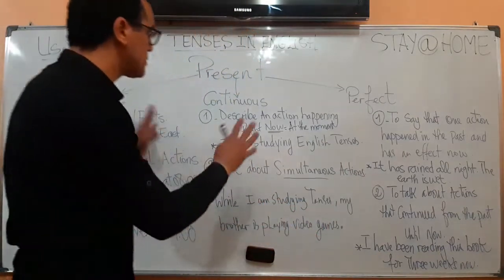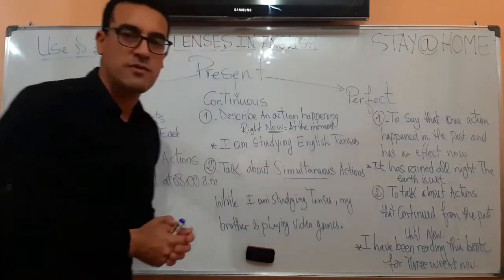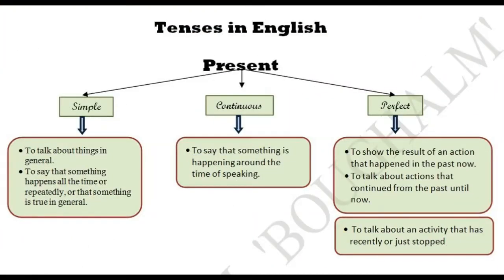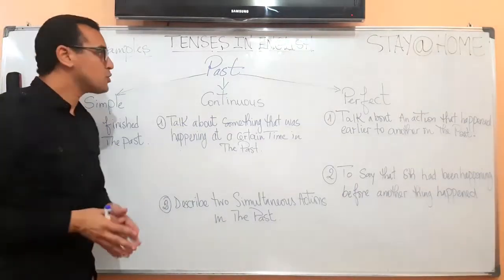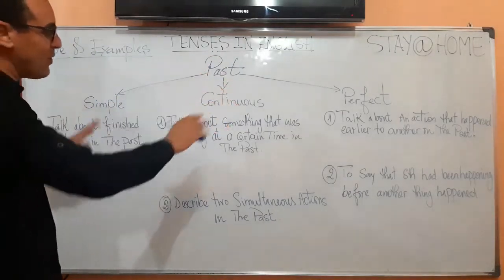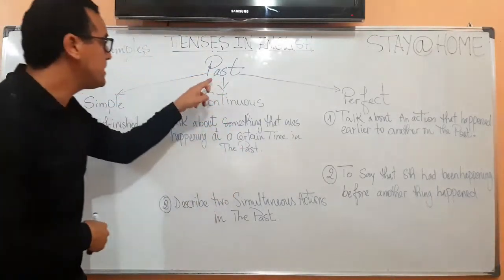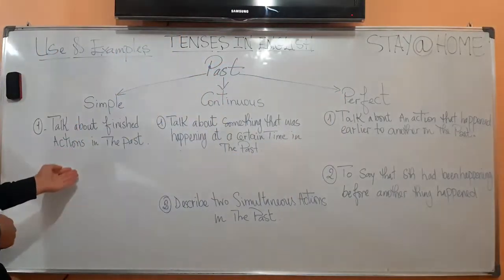Those are the main uses of the present simple, present continuous, and present perfect. Try to focus on them and write them down in your notebook. Now let's move on and replace the present with the past. We still have the past simple, the past continuous, and the past perfect.